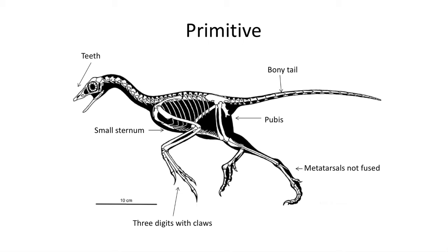The last primitive trait is an unfused metatarsal bone. In modern birds, the three metatarsal bones are fused into a single bone, the tarsometatarsus bone. If you've ever watched a long-legged bird like a flamingo walk, the reason it looks like the knee is bent backward is because you are actually looking at the joint between the tibia, fibula, and the fused tarsometatarsus bone in the ankle.